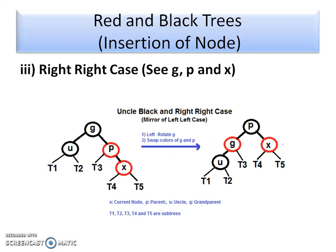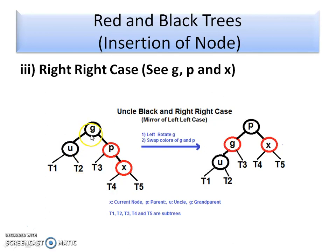The right-right case is the mirror of the left-left case. Here the grandparent's right child is the parent and the parent's right child is X. Both parent and newly inserted node are red, violating property 4. Since the uncle is black, we perform a left rotation (LL rotation) at the grandparent level. The parent takes the position of the grandparent, the grandparent moves to become a child, and after swapping colors of parent and grandparent, the final tree is a valid Red-Black tree.